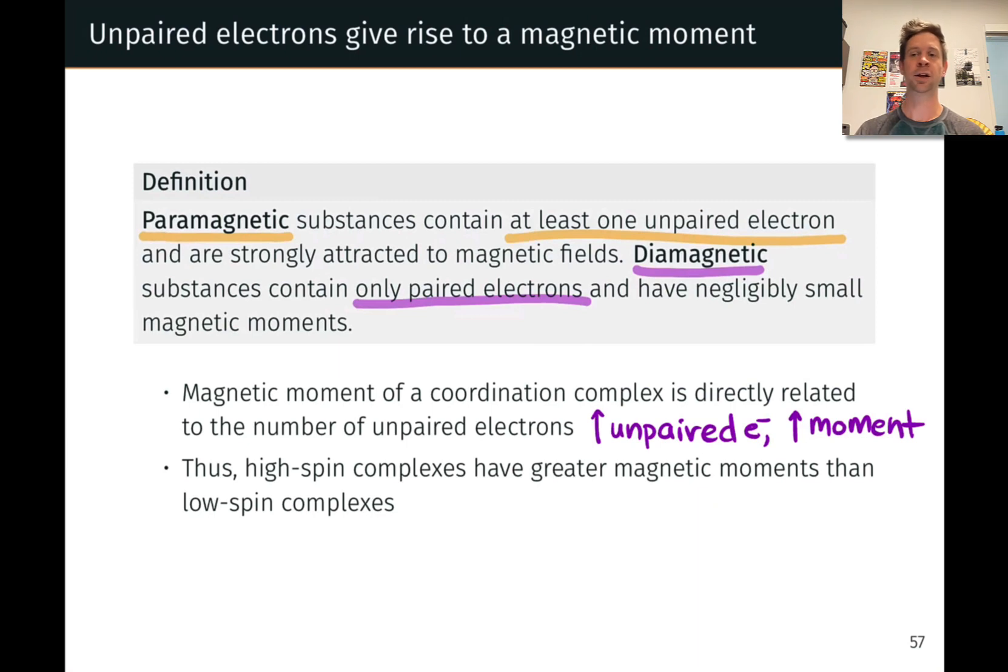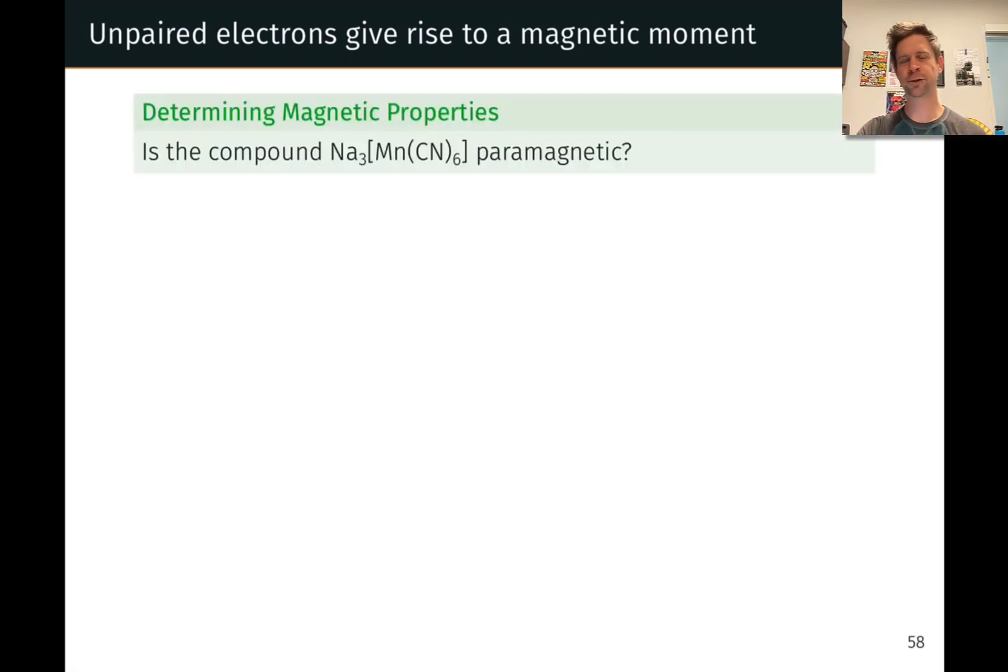And this is a great empirical way to measure the difference between a high spin and a low spin complex, using something like a magnetic susceptibility balance to get a quantitative measure of the number of unpaired electrons. Let's see now how we can use crystal field theory and the number of unpaired electrons to answer what appears to be a very simple question.